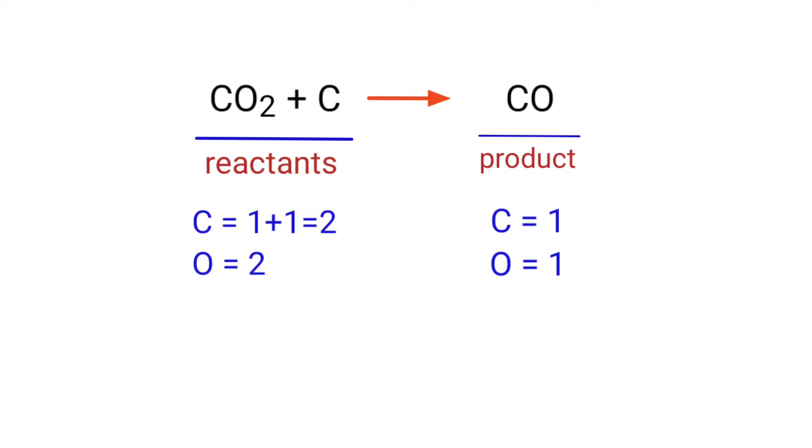In this equation the number of atoms at the reactants side are double the number of atoms at the product side. So to balance this equation we need to put a coefficient of two in front of CO.